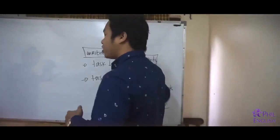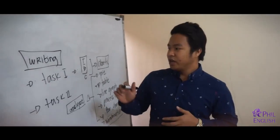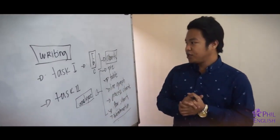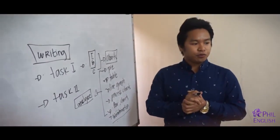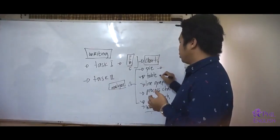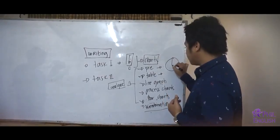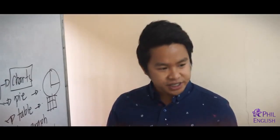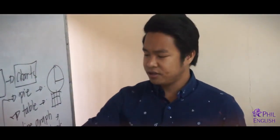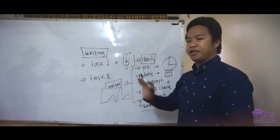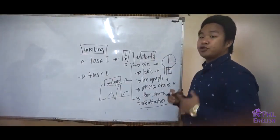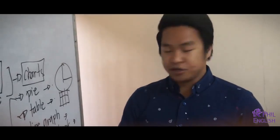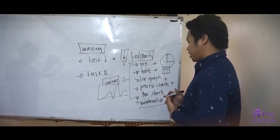These are the most important things you should do in Task 1. It is very important for you to know the pictures. So, pie chart — this is the pie. The table includes numbers or digits. For line graph, we have the X and Y axis. For process chart, you have to see the methods for the process — on how to do something. Bar charts include the bar, and then there are combinations.